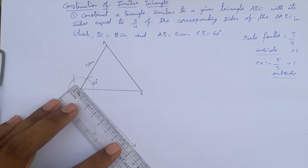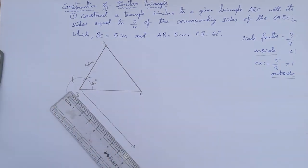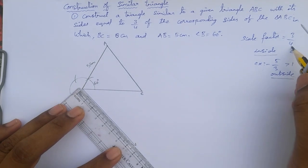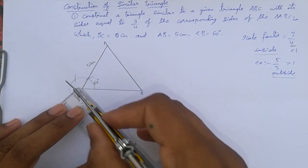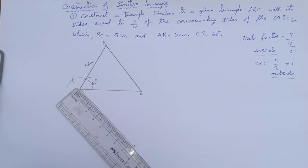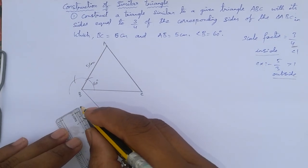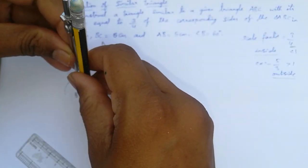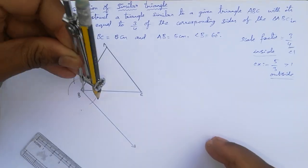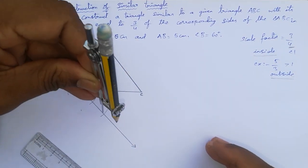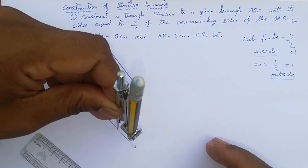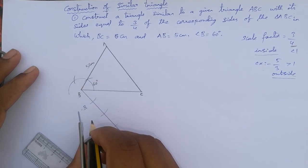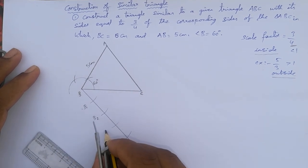We need to cut equal divisions based on the scale factor. The larger number is 4, so we need 4 equal parts. Using 1.5 centimeters, mark from B: first, second, third, and fourth divisions. Name them B1, B2, B3, and B4.